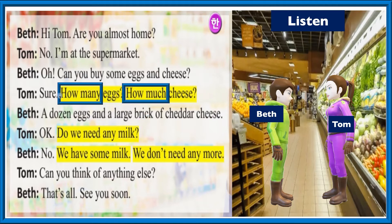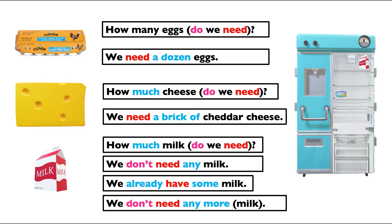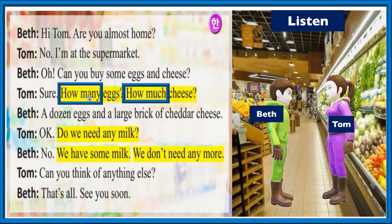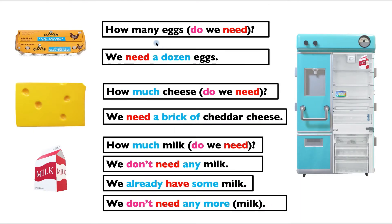As you notice, we have 'how many' and 'how much' here because we are talking about words called quantifiers that describe how much or how many of things. She says 'how many eggs' and Beth says 'a dozen eggs.' He says 'how much cheese' and she says 'a large brick of cheese.' There are no numbers here. How many eggs do we need? She means how many eggs do we need — notice this question has no verb because they've left it out. So she says we need a dozen eggs.